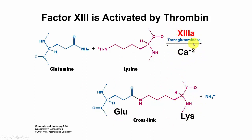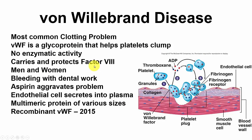Von Willebrand disease is the most common clotting problem. Von Willebrand factor is a glycoprotein that helps platelets clump — it binds to collagen and helps platelets bind to the collagen. It has no enzymatic activity, but it also carries and protects Factor 8, so deficiency in von Willebrand factor also means less Factor 8. It is equally prominent in men and women. Bleeding occurs with dental work, and aspirin aggravates the problem. Endothelial cells secrete von Willebrand factor into the plasma.